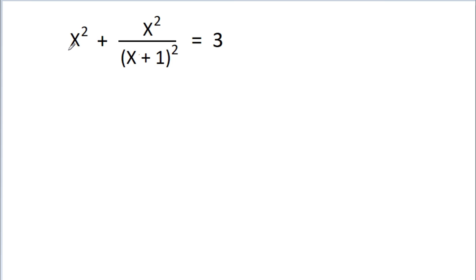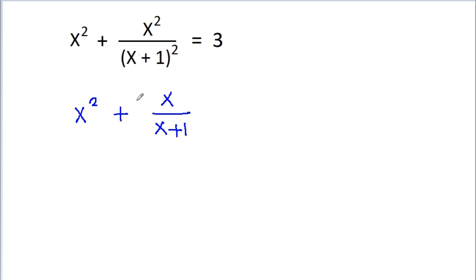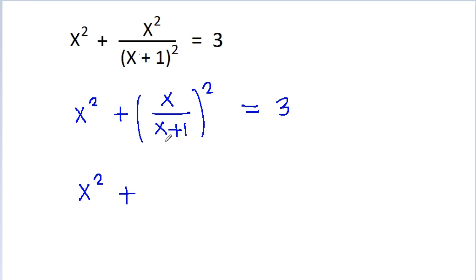So, here we have given that x squared plus x squared by x plus 1 whole square, which can be written as x by x plus 1 whole square is equal to 3. Now we can write this as x squared plus x plus 1 in the denominator.